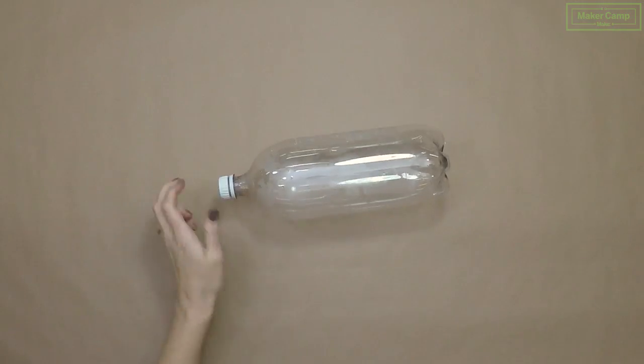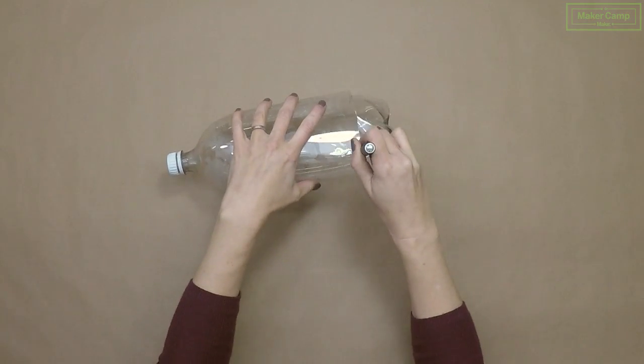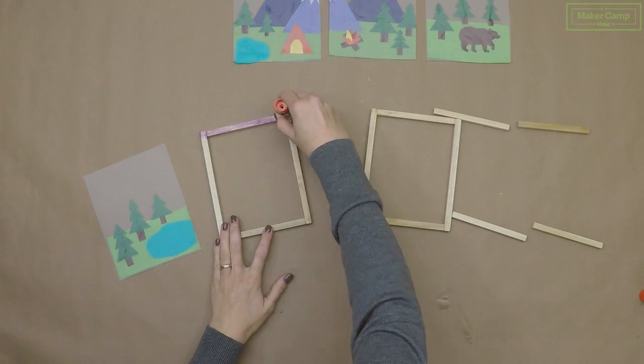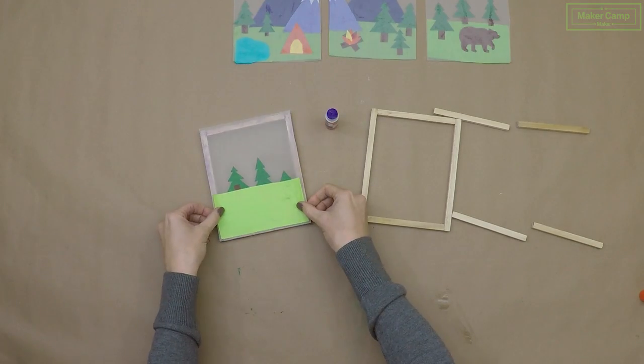First, we'll start with a plastic cylinder which we've cut out from a 2-liter soda bottle. This will be the inner spinning part of the lamp. Then we'll build a basic wood and vellum lantern for the outside of our lamp.